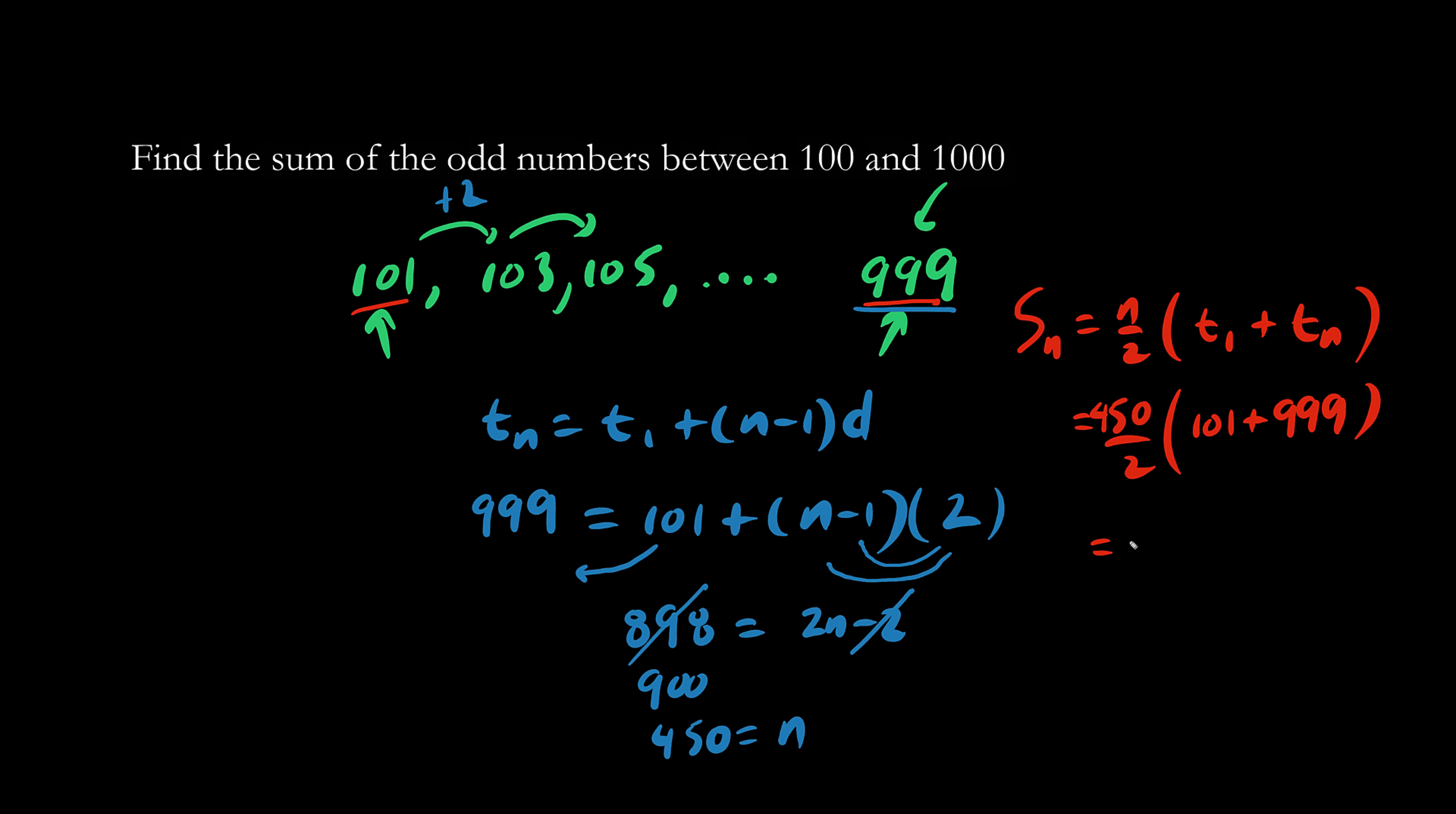So using our calculator, we get the result. 247,500 is the sum of all the odd numbers between 100 and 1,000.